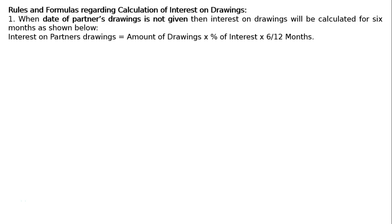Rules and formulas regarding calculation of interest on drawings. The first rule: when the date of a partner's drawings is not given, then interest on drawings will be calculated for 6 months. Interest on partner's drawings equals amount of drawings multiplied by percentage of interest multiplied by 6 upon 12 months. This is calculated for the average period, where the date of drawing is not given.